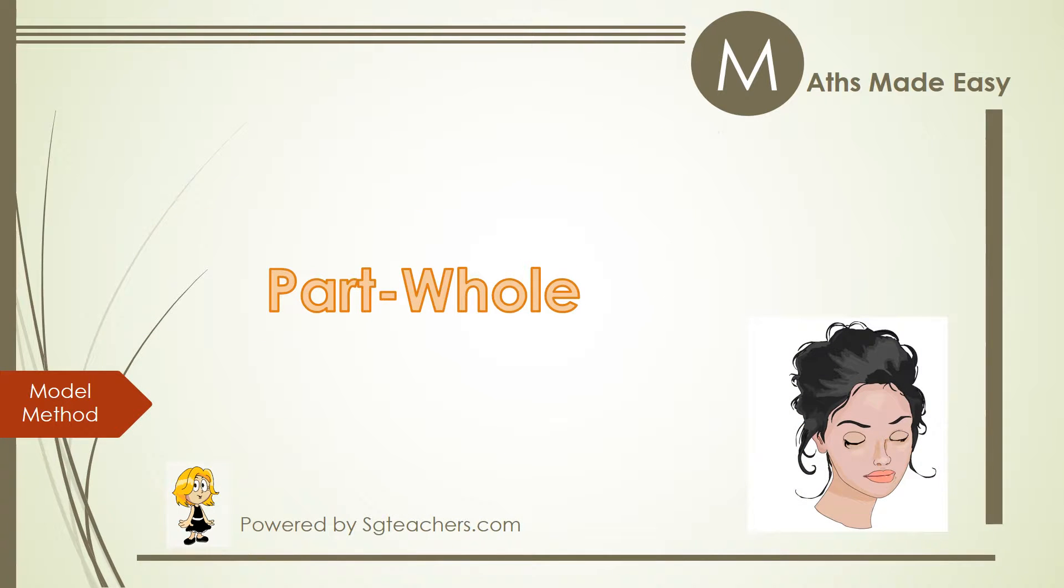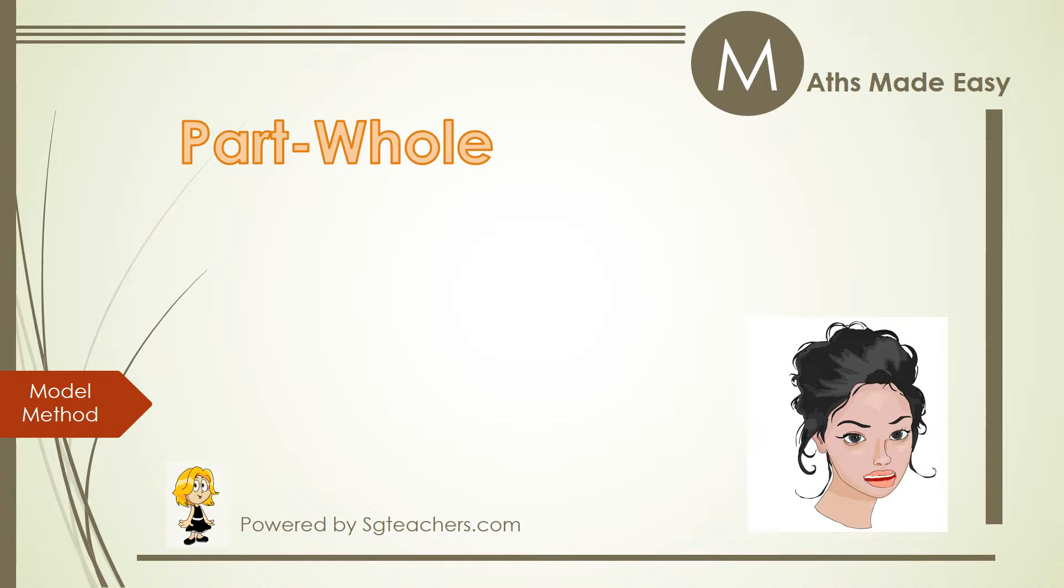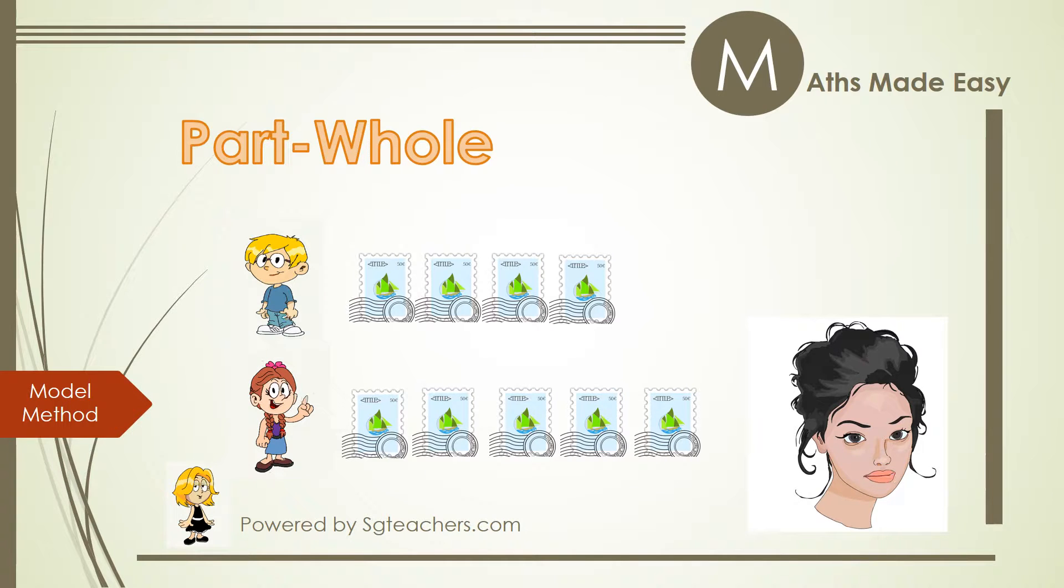Let's look at the part-whole model. Let's consider this simple word problem. John has 4 stamps. Mary has 5 stamps. How many stamps do they have altogether?